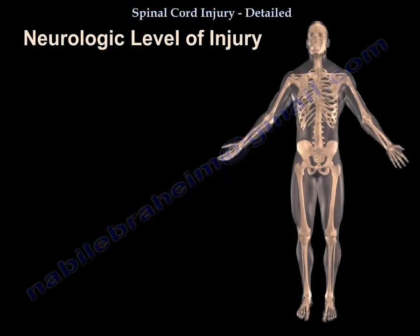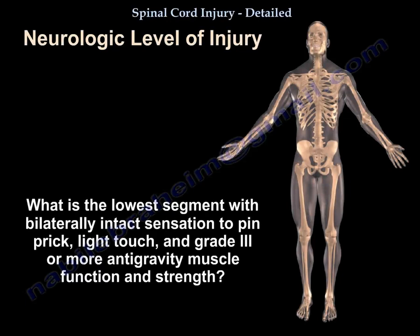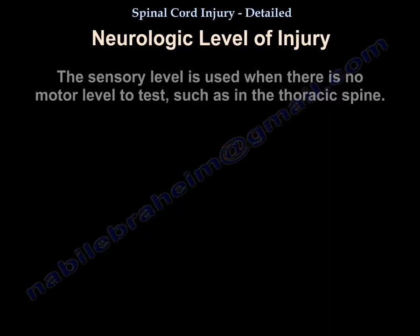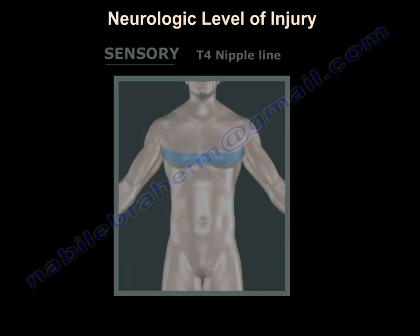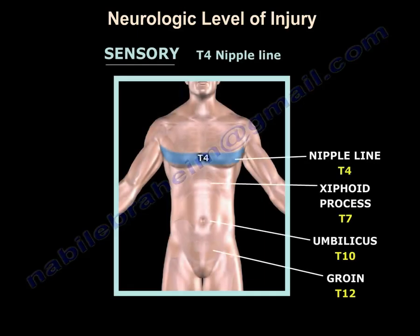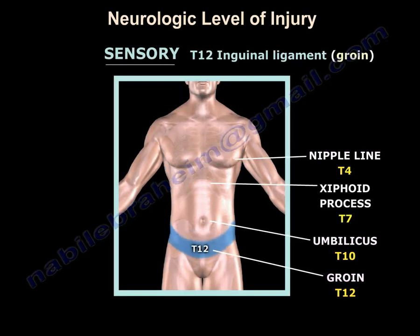After that, we determine the neurological level of injury - the lowest segment with bilaterally intact sensation to pin prick, light touch, and greater than or equal to anti-gravity muscle function and strength. The sensory level is used when there is no motor level to test, as in the thoracic spine. Key sensory landmarks: the nipple is at T4, the umbilicus at T10, and the symphysis pubis at T12.